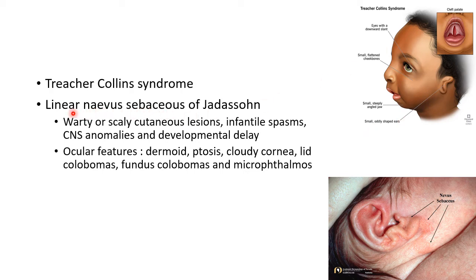Another systemic association of limbal dermoid is linear nevus sebaceous of Jadassohn. This presents with warty or scaly cutaneous lesions and is also associated with infantile spasms, CNS anomalies, and developmental delay. Ocular features include limbal dermoid, ptosis, cloudy cornea, lid colobomas, fundus colobomas, and microphthalmos.